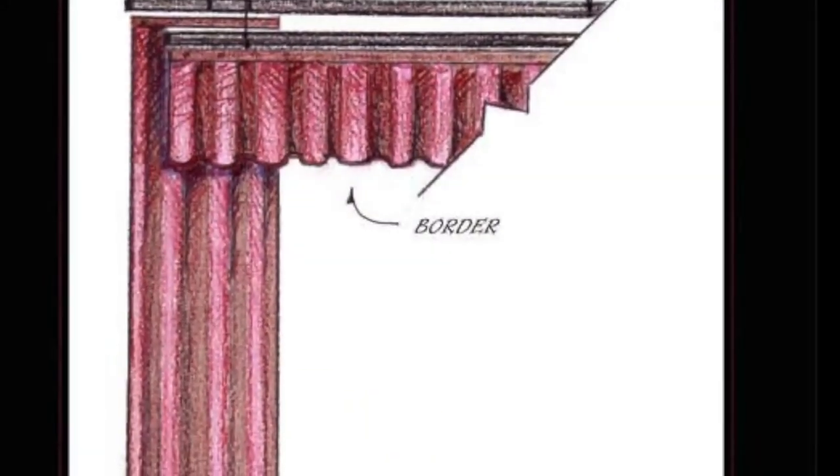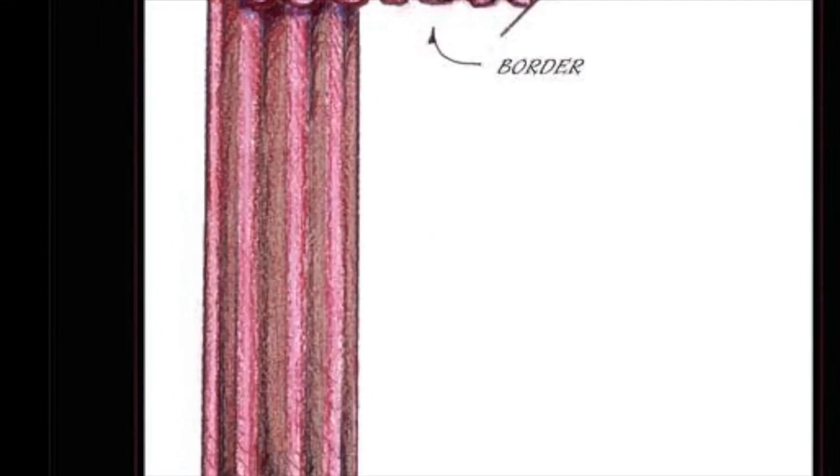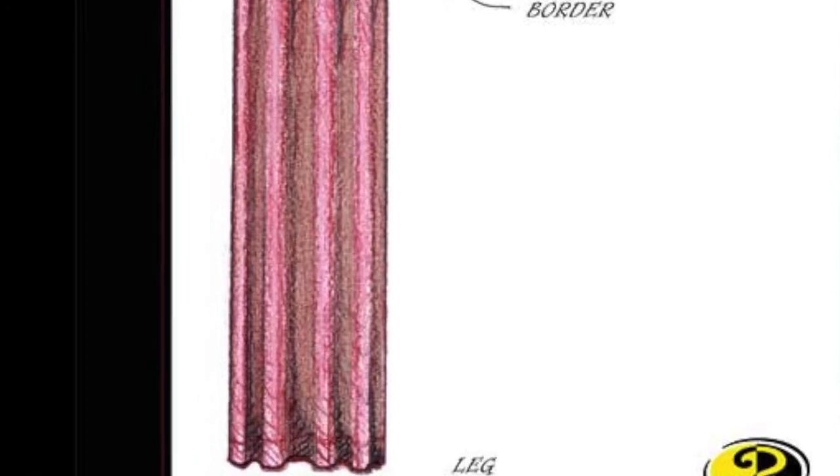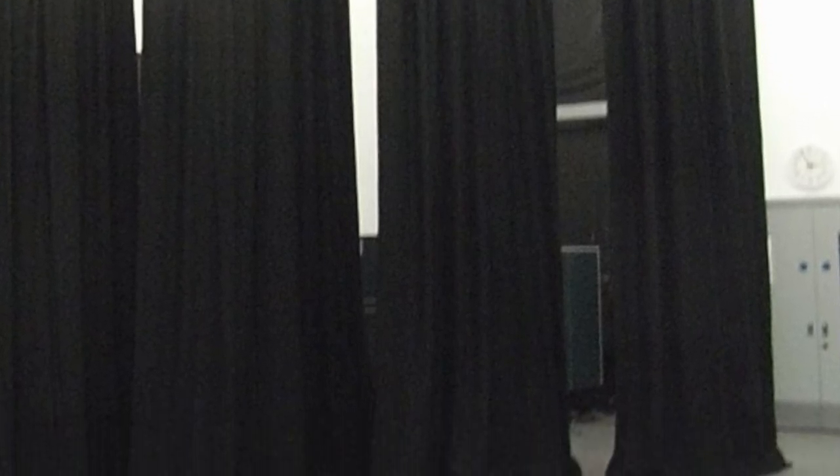Legs are found on either side of the stage and are parallel to the main curtain. They are used to block the audience's view of the backstage area. Depending on the theater, there are usually three or more legs on each side to help frame the stage.